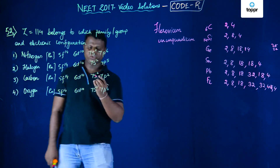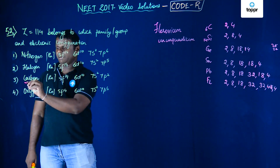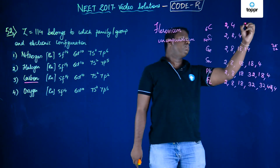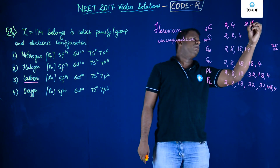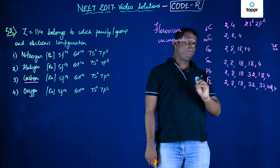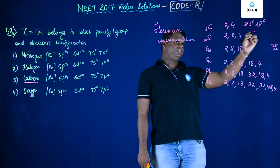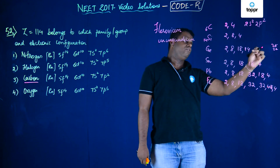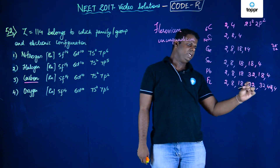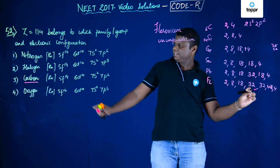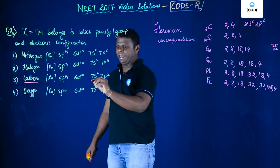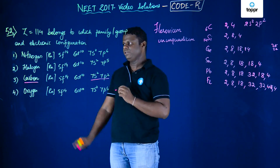It belongs to the carbon family. The outermost electronic configuration pattern for this group is ns², np²: carbon is 2s²2p², silicon is 3s²3p², germanium is 4s²4p², tin is 5s²5p², lead is 6s²6p², and Flerovium is 7s²7p².